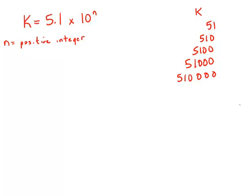We don't know how many digits there are going to be total. We don't know how many zeros there are going to be after the 5 and the 1. That's what the n is determining.